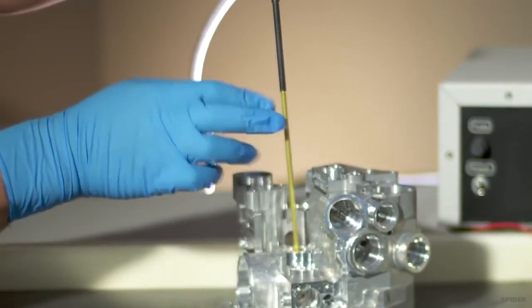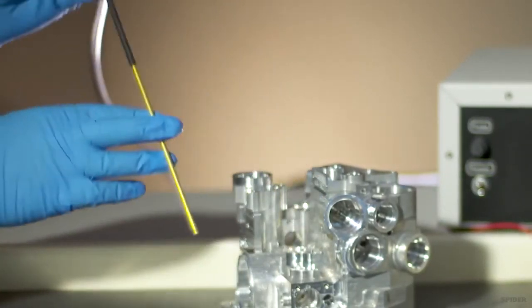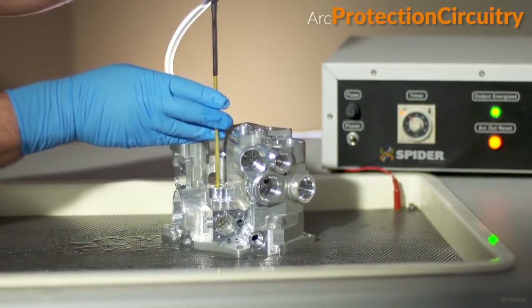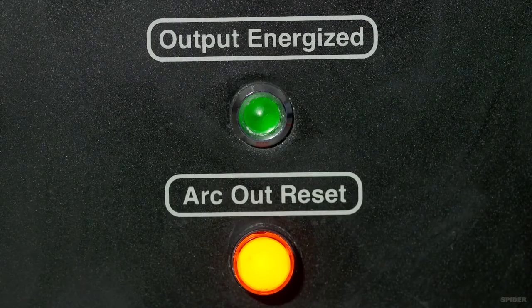The probe itself is insulated for unintentional probe to part contact. If an inadvertent contact is made, the arc protection circuitry designed into the machine will shut it down almost instantaneously, minimizing scrap.